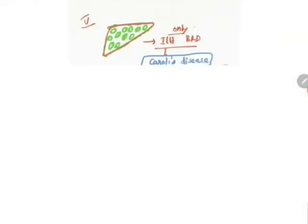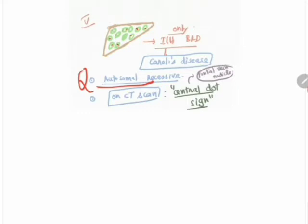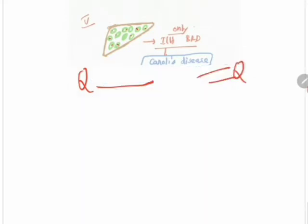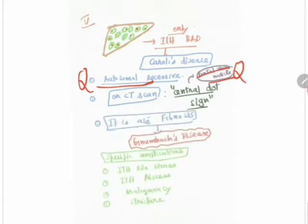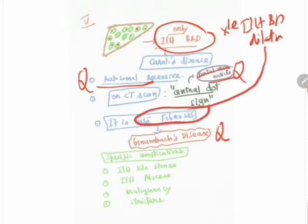Type 5, originally described by Heroe Lee, is an autosomal recessive disorder — an important MCQ point. On CT scan, a central dot sign is seen, which corresponds to the portal vein radicle. This is essentially Caroli's disease: multiple intrahepatic bile duct dilatations. When Caroli's disease is associated with fibrosis, it is termed Grumbach's disease.